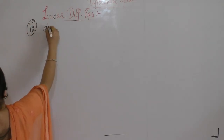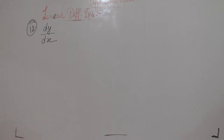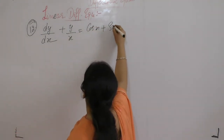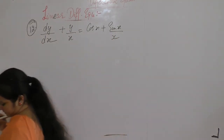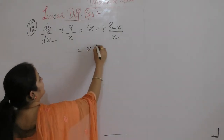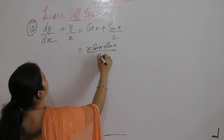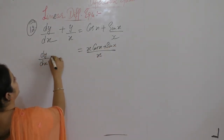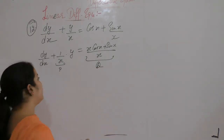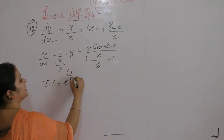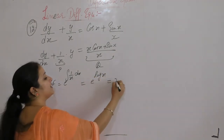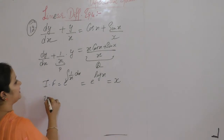Solve the differential equation dy/dx + y/x = cos(x) + sin(x)/x. Here p = 1/x and q = cos(x) + sin(x)/x. Find the integrating factor: integral of 1/x is log x, so e^(log x) gives us x. Now y · x equals integral of (x·cos(x) + sin(x)) dx plus c.